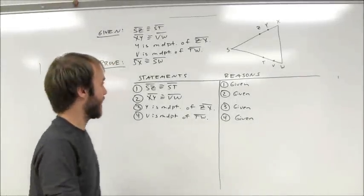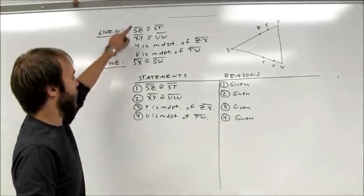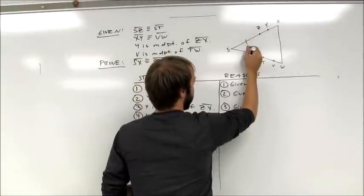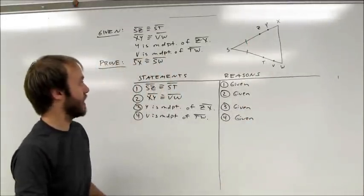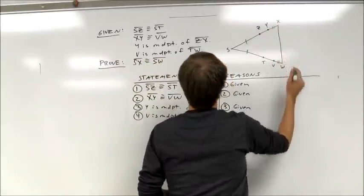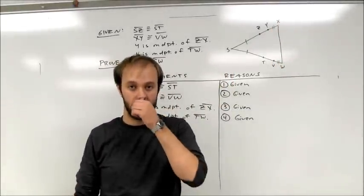Let's take a look at what this proof is asking me to do. At the start, it tells me that SZ is congruent to ST, so I'm going to mark those two segments congruent. Also, it tells me that XY is congruent to DW. So I've marked both of those.